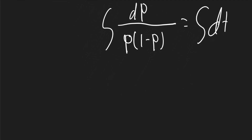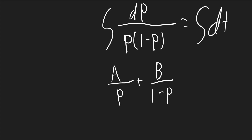Now on the left side we can use partial fractions, so it'll be A over p plus B over (1 - p), which is equal to 1 over p times (1 - p).